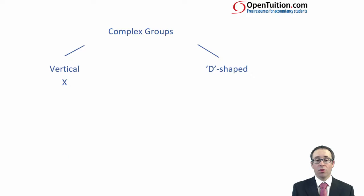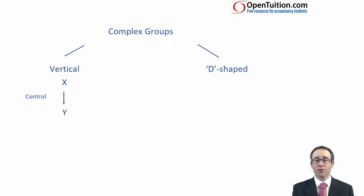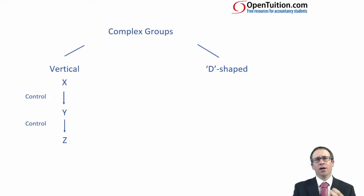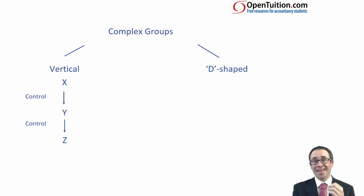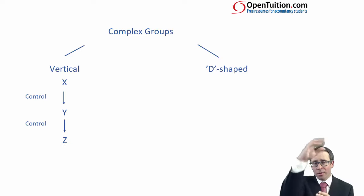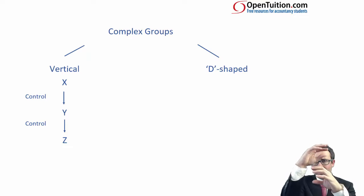With a vertical group structure, X has control over another company, say Y. You have the power to direct the activities — you own greater than 50% of the voting rights — so X is the parent and Y is the sub. However, the subsidiary itself also has an investment in another entity, and that investment gives it control of that other entity. So effectively the parent controls the sub and the sub controls another subsidiary.